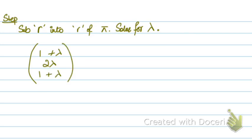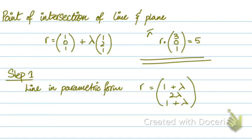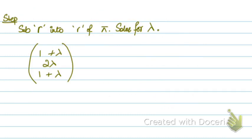Let's go back to the equation of the plane. The equation of the plane is r dot 301 equals to 5. So r over here will be 1 plus lambda, 2 lambda, and again 1 plus lambda, dot 301 equals to 5.